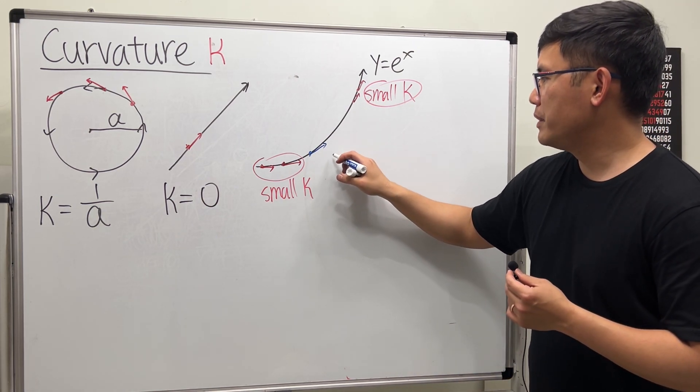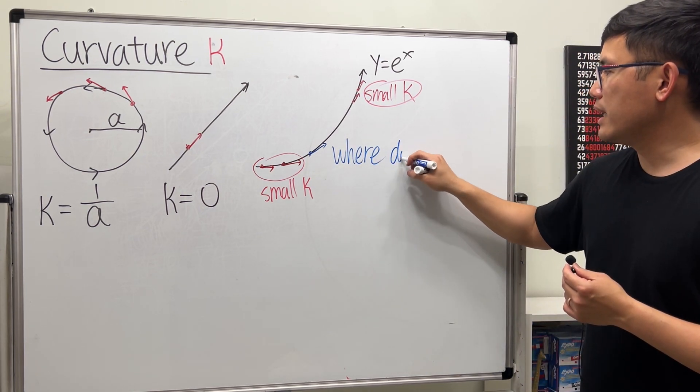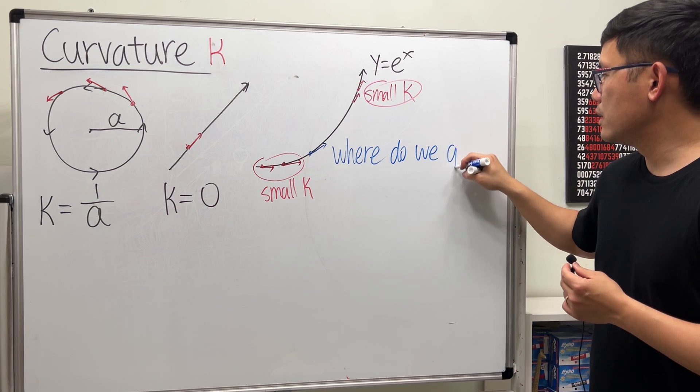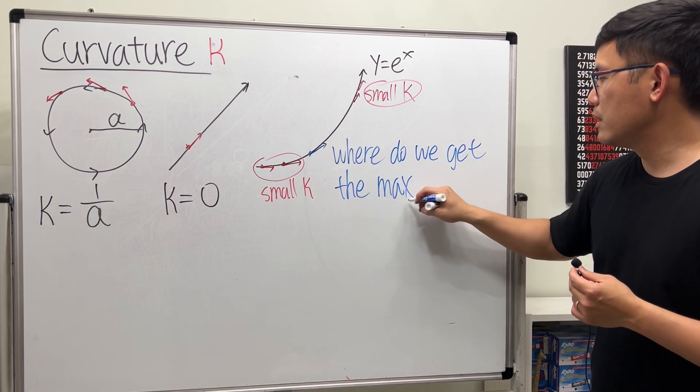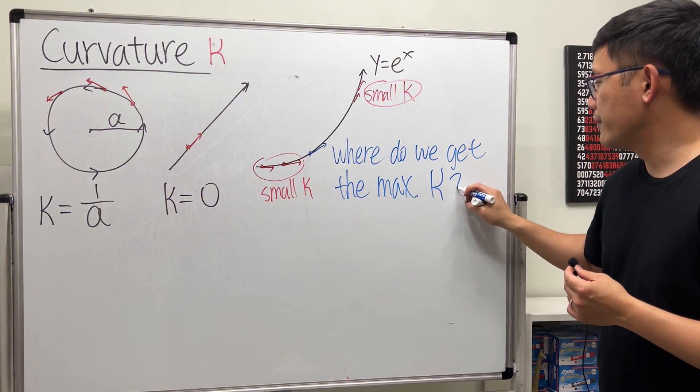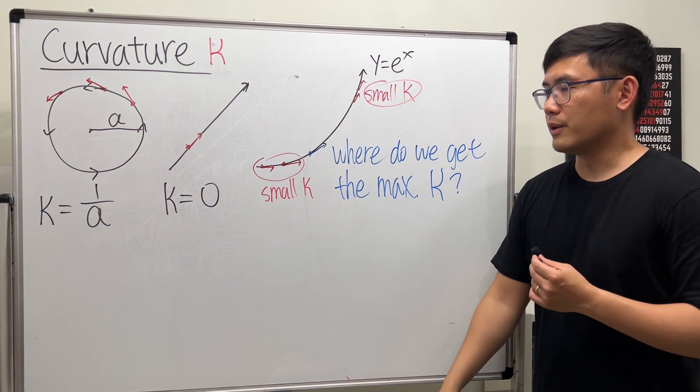There's one interesting question: where is it going to give us the biggest curvature? Maybe somewhere here, right? So biggest K—where do we get the maximum curvature? I will solve this for you guys in another video, but this is a question for you guys to think about.